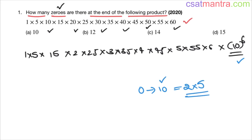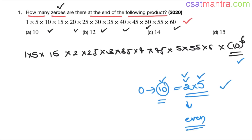Any number can be written as a product of prime numbers. 10 can be written as 2×5. Here, 2 is an even prime number — it is the only even prime number; all other prime numbers are odd. This is very important; UPSC may frame a question based on this. So 2 is prime and 5 is prime.